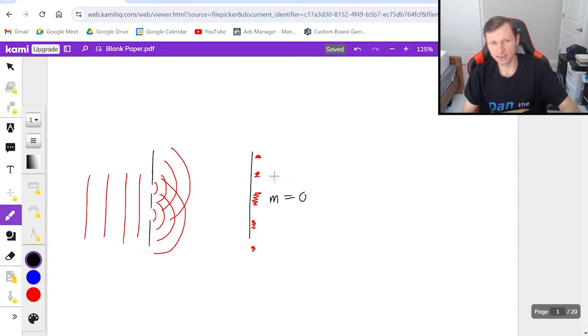And the next one's m equals one, and m equals two. And the same thing goes on the other side, m equals one, and m equals two, it's the number of bright fringes.